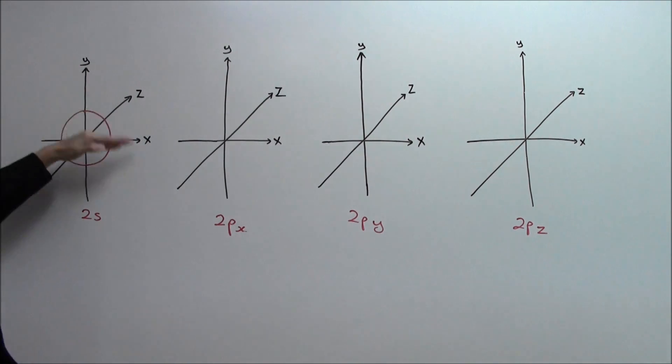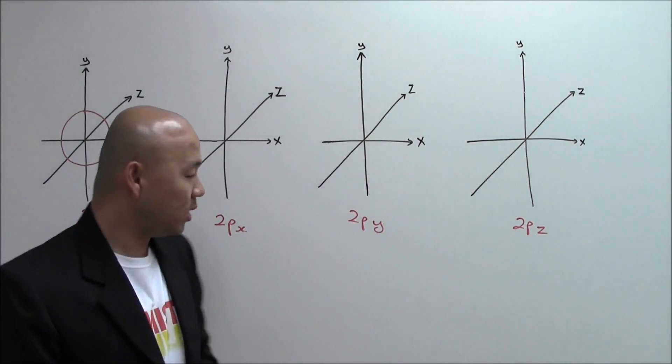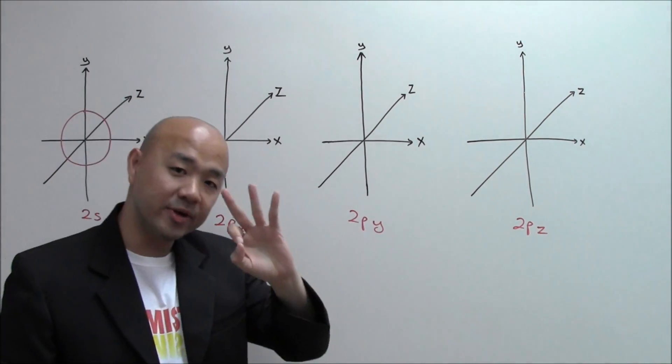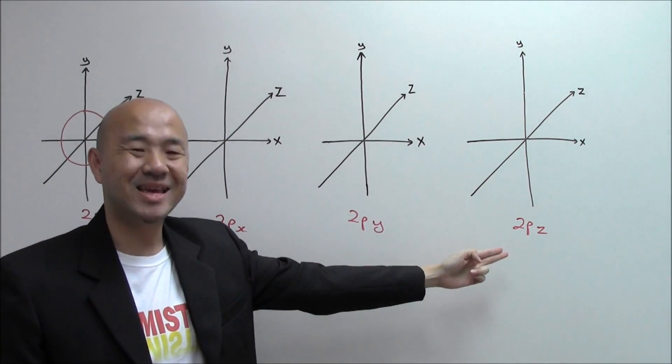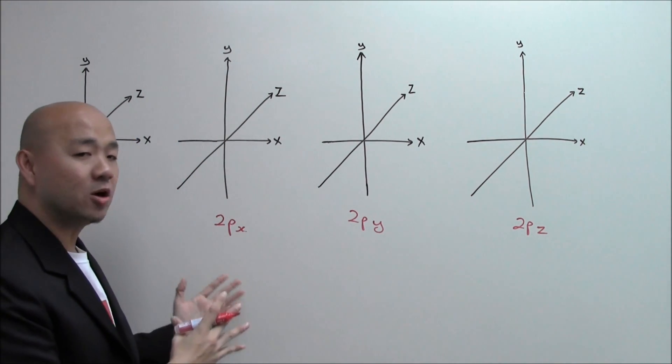Inside the axis of X, Y and Z, so that will be your 2S orbital. What about the 2P orbitals? There are three types known as PX, PY and PZ. So what is the shape like?